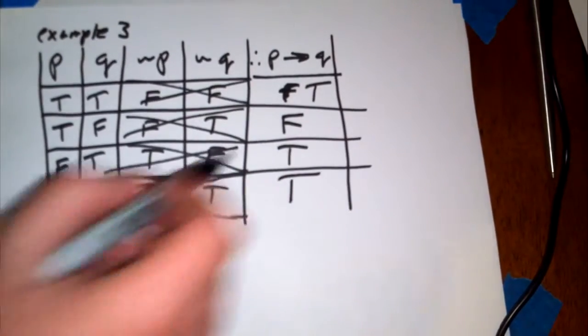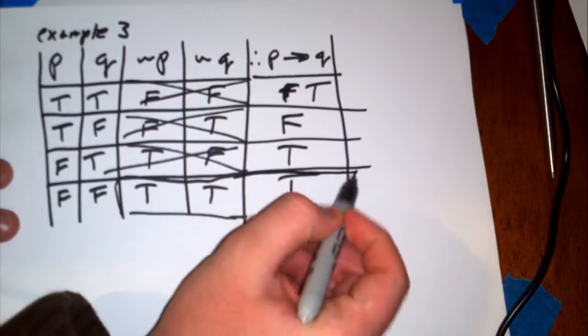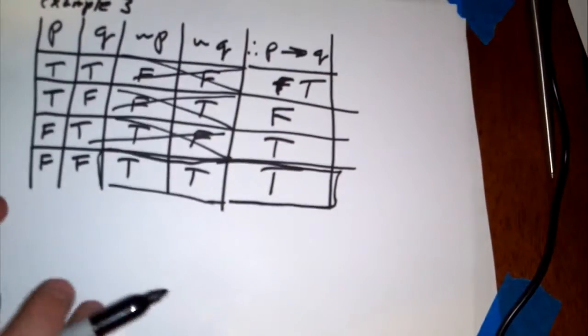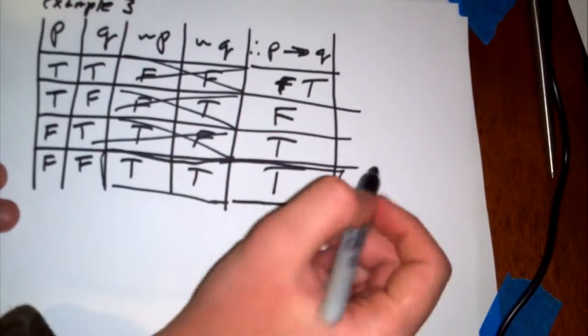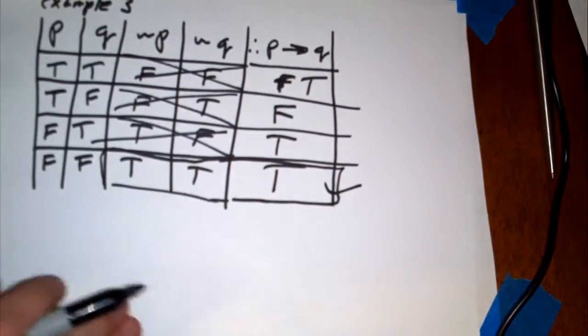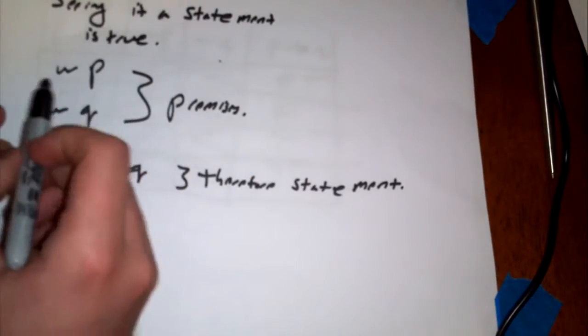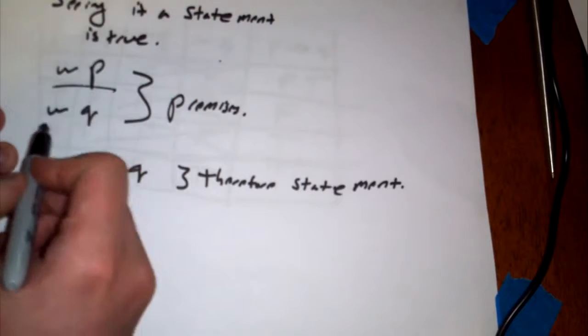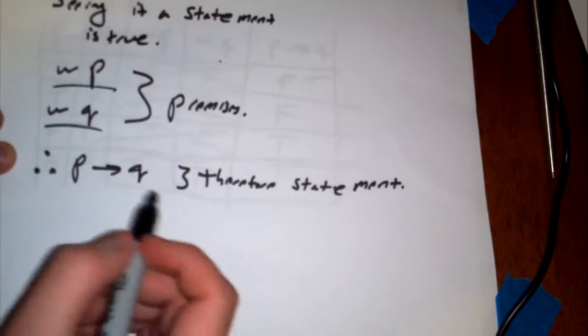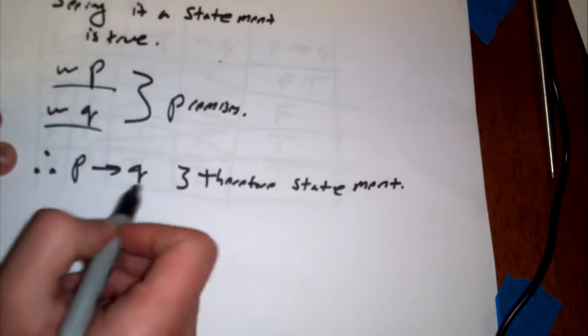What we have to do is now check to see if this is true for the critical row. And in this case, it is. So, we only really have to check for this critical row. This statement saying that if not P, not Q are the premises for this, then P then Q. This is an example of one type of statement that is true.